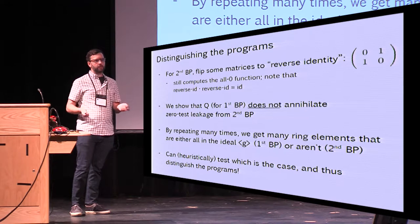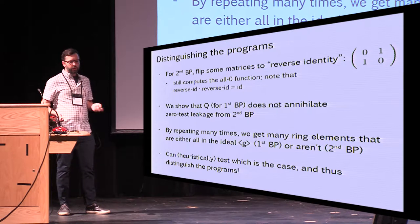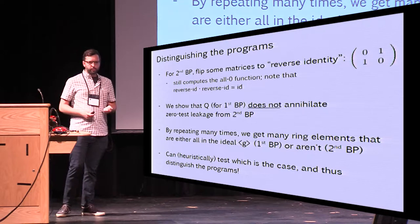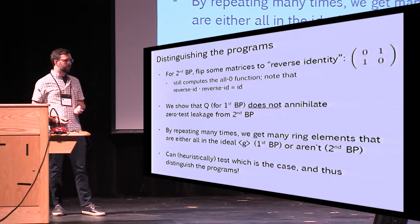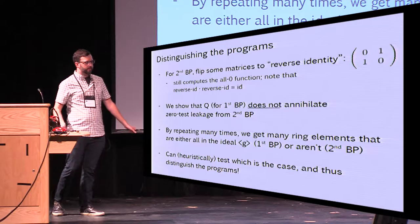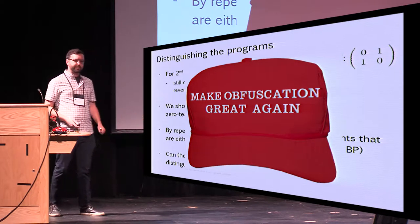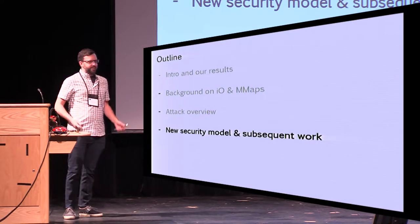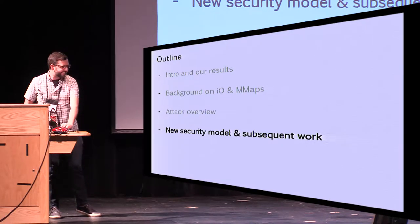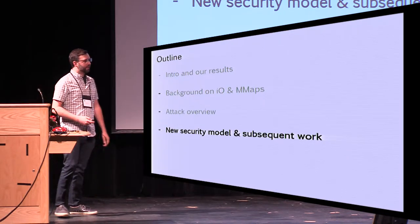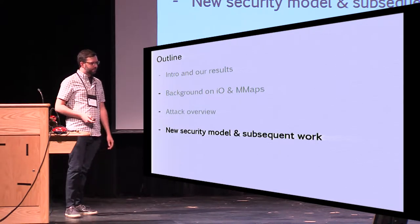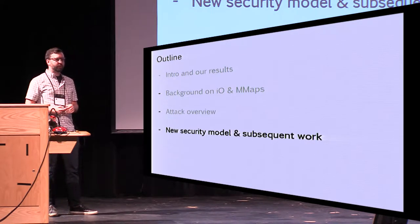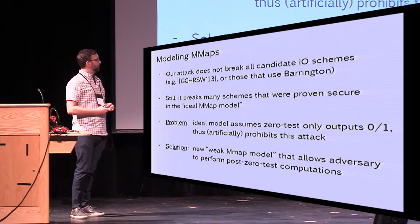By doing this, we distinguish the programs — we as the attacker have won. But we're cryptographers, and we want to be secure, so this is really bad. We need to do something about this. Let's make obfuscation great again. Our attack doesn't break all candidate IO schemes — there are many schemes we can break, but some we can't. In particular, the original candidate, and candidates that start by converting a circuit via Barrington's theorem, we don't know how to break. But the point is that for all of these candidates, both the ones we've broken and those we haven't, they're all proven secure in the ideal multilinear map model.